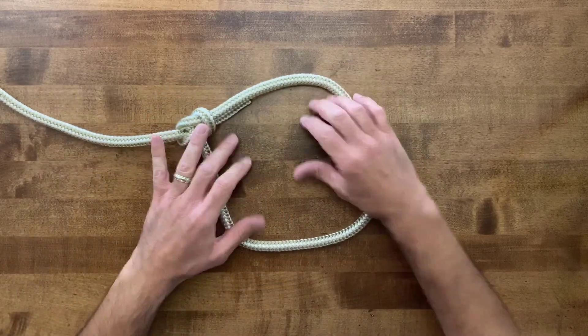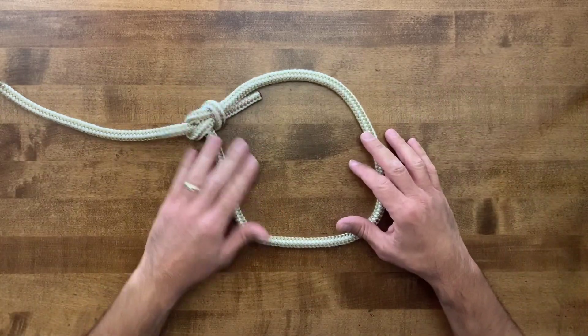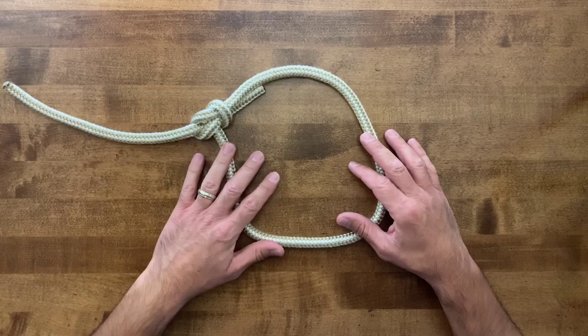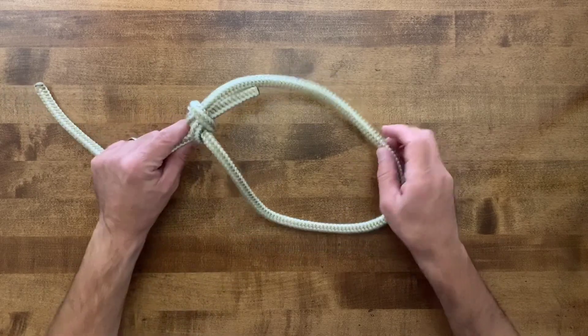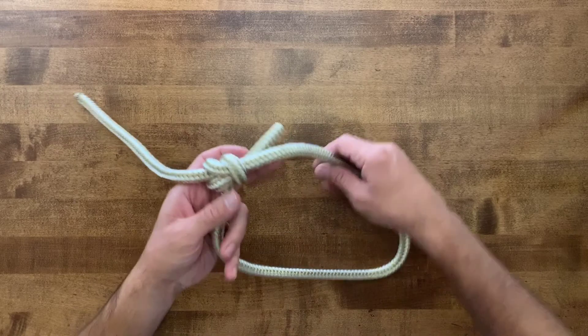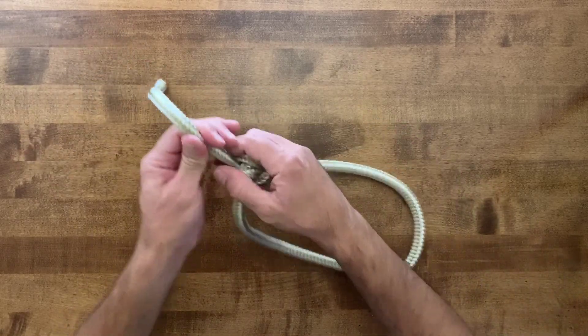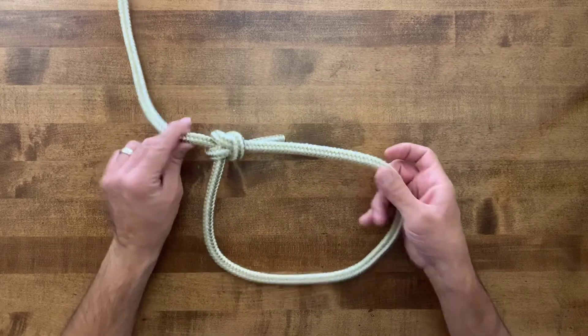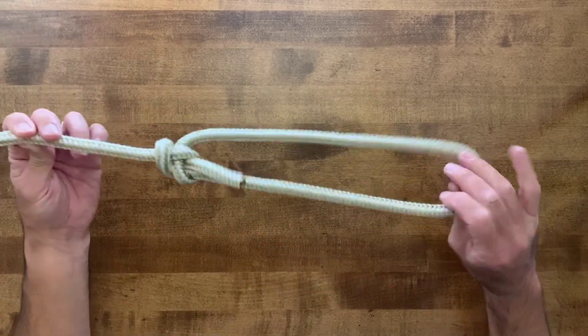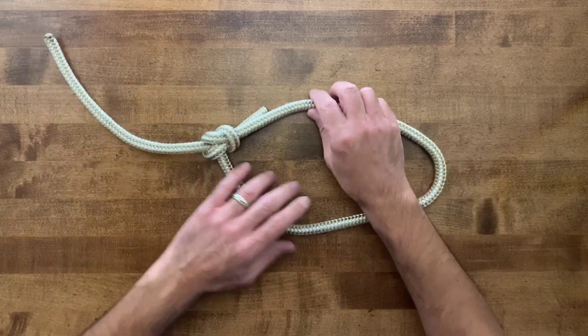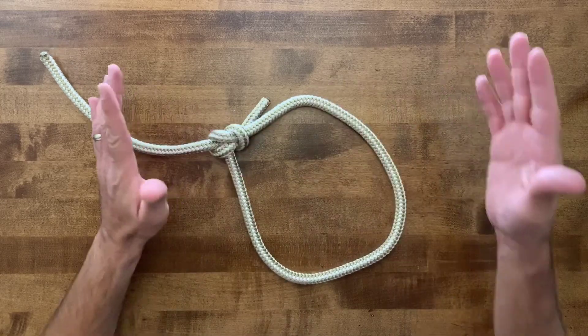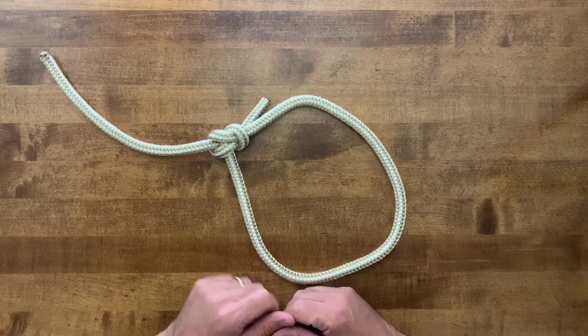And of course, you'd make a larger loop than this, but I'm just making this size loop. Of course, this is the size of the rope that I have. But they would be able to put this underneath their arms, and be pulled to safety, because it will not cinch down on them, and suffocate them in that way. And so, bowline knot is a very handy knot to know, and certainly you could even end up saving someone's life by knowing this knot.